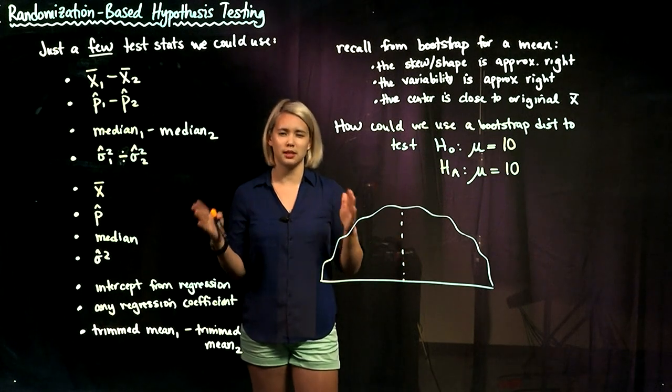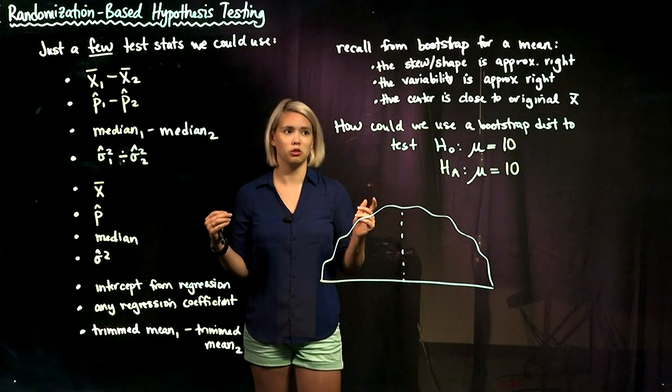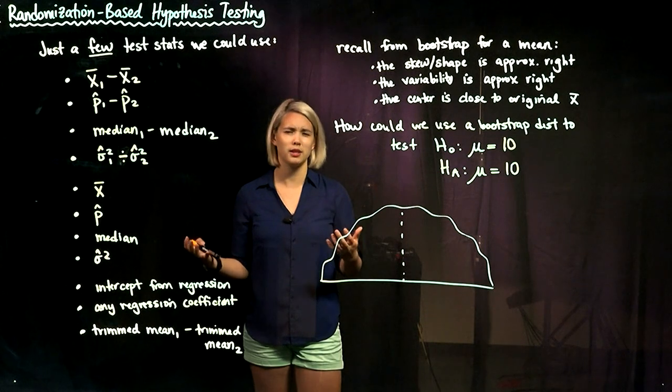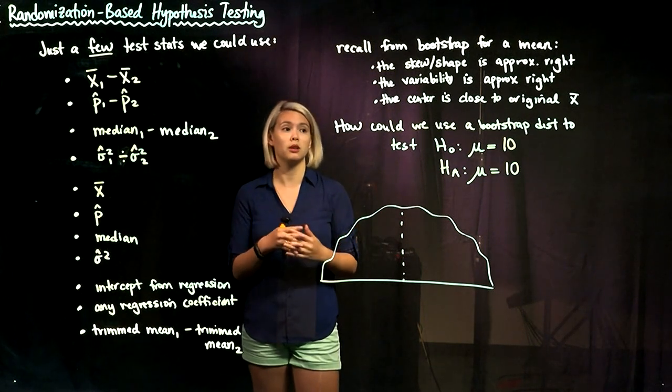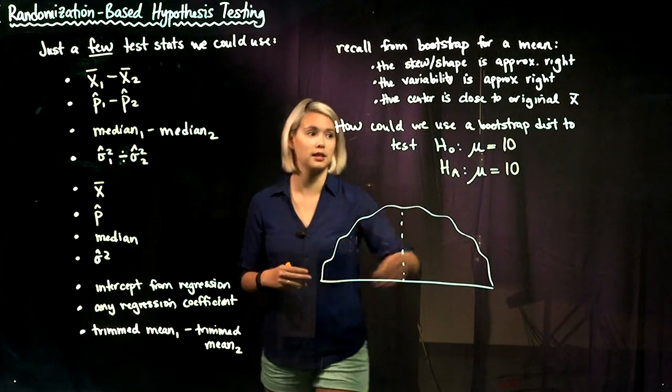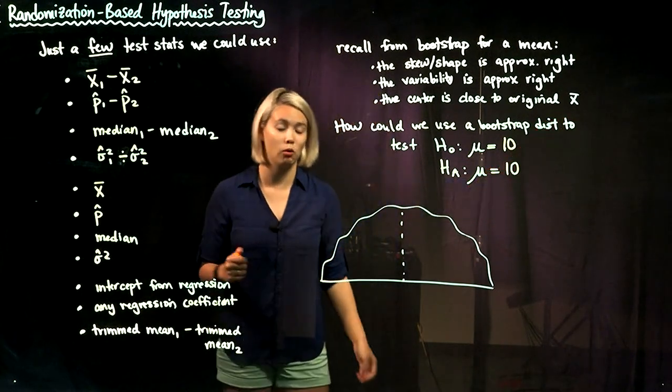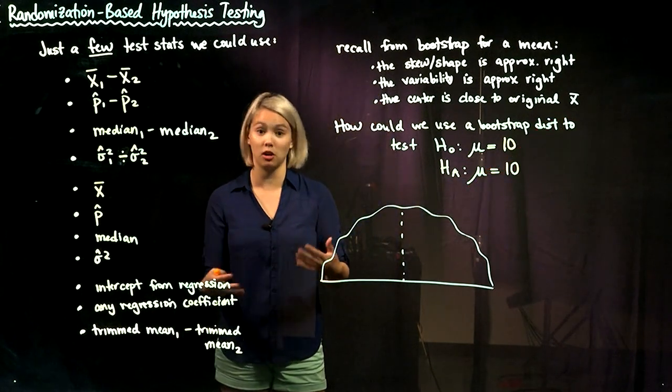But then when we come to the center of the bootstrap distribution, we need to remember where is that bootstrap distribution centered? It's going to be centered pretty close to the original data set's sample mean. It won't be perfectly centered at the sample mean, but it will be pretty close.